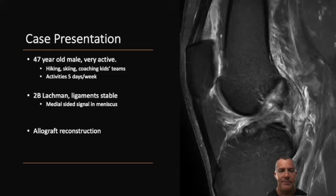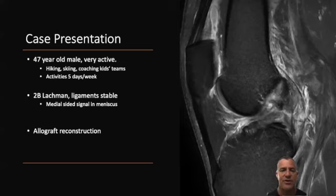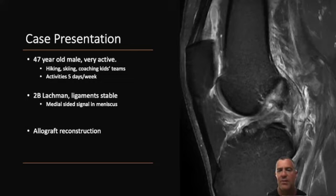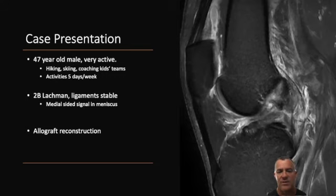This is a clinical example: a 47-year-old patient who is extremely active — he hikes, skis with a season pass annually, coaches his kids' soccer teams, and performs cutting and pivoting activities up to about five days a week. On physical exam, he had a 2B Lachman; the remainder of his ligaments were stable. He did have some medial-sided signal in his meniscus, which made us concerned for a medial meniscus tear. Because of his age and profession, he preferred to proceed with an allograft reconstruction.